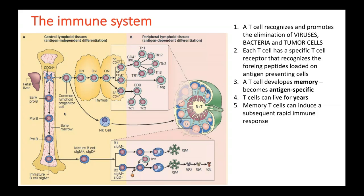T cells generate from the bone marrow stem cells, which are characterized by the presence of the CD34 antigen. These stem cells can differentiate into T cells and B cells, among many other cell types. T and B cells are the two groups that impart specificity — the capacity of our immune system to recognize specific targets. T cells develop during childhood and differentiate into various groups; the two main types are CD4-positive and CD8-positive T cells.